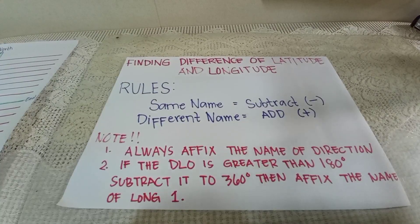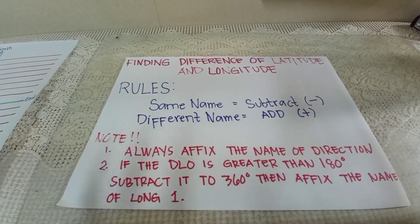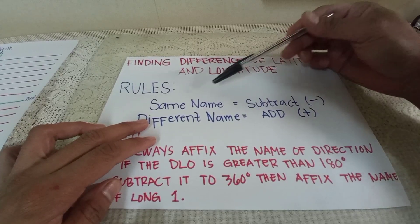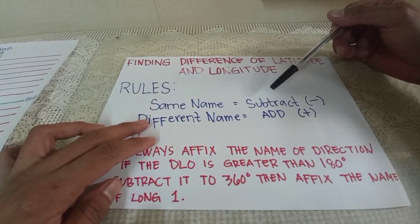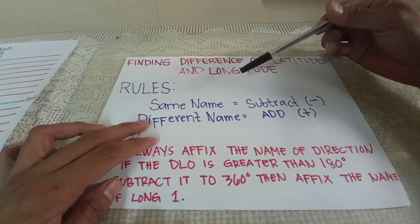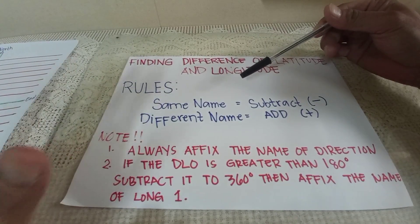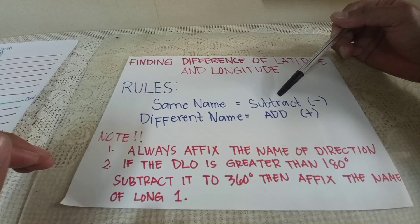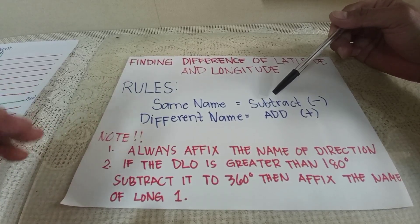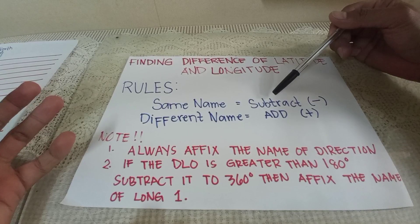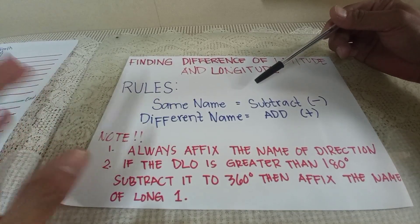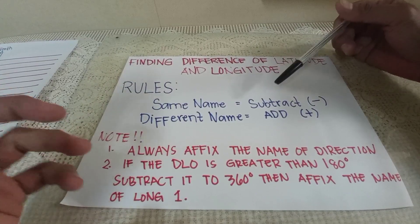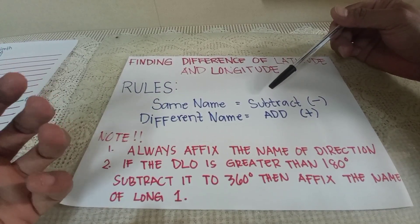In finding the difference of latitude and longitude, we have rules to be followed. Same name — you have to subtract. If latitude 1 is north and latitude 2 is north also, you have to subtract to find the difference of latitude. It is the same with longitude. If longitude 1 is east and longitude 2 is east also, you have to subtract to find the difference of longitude.